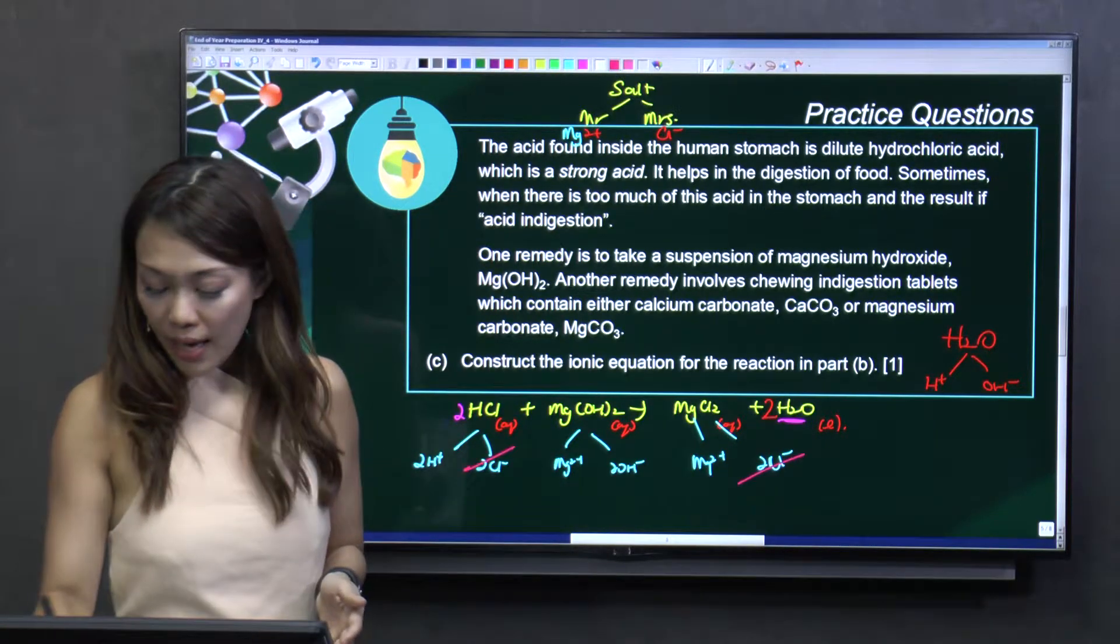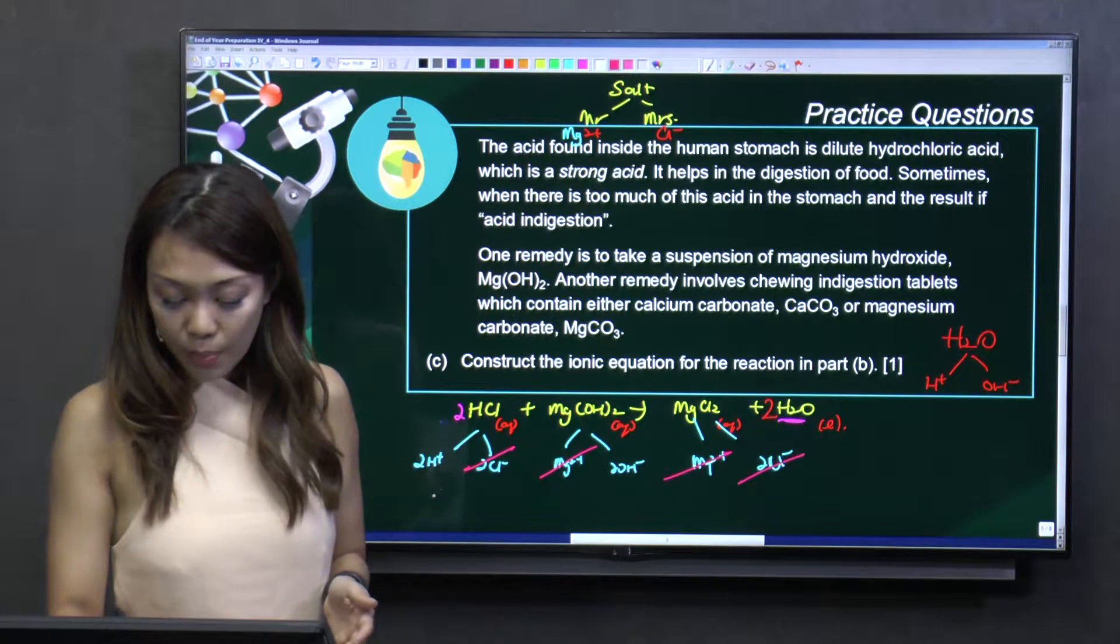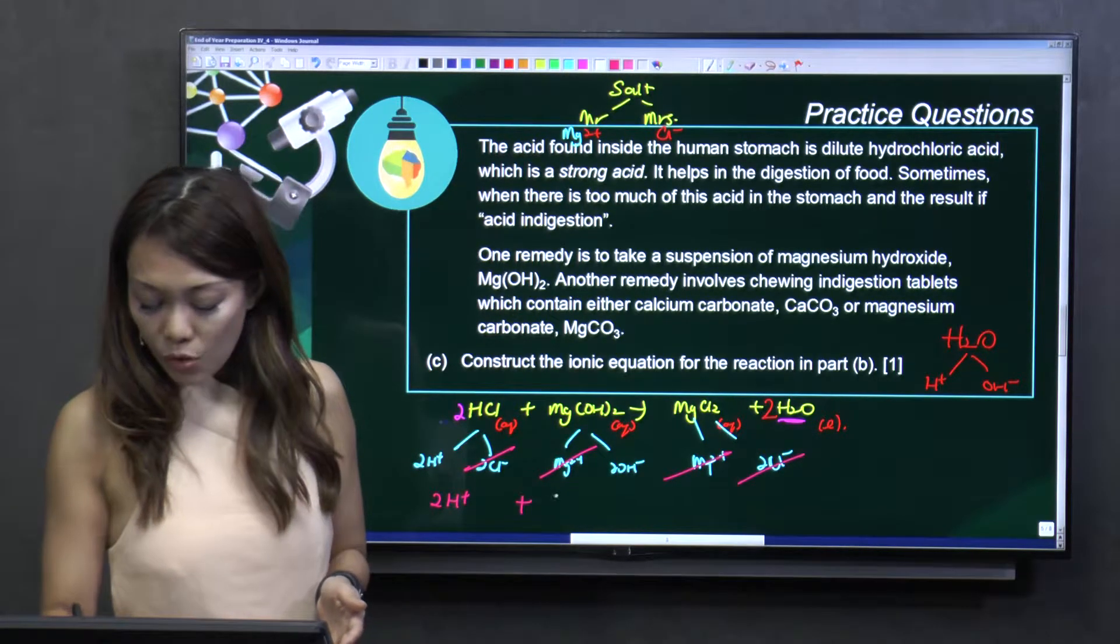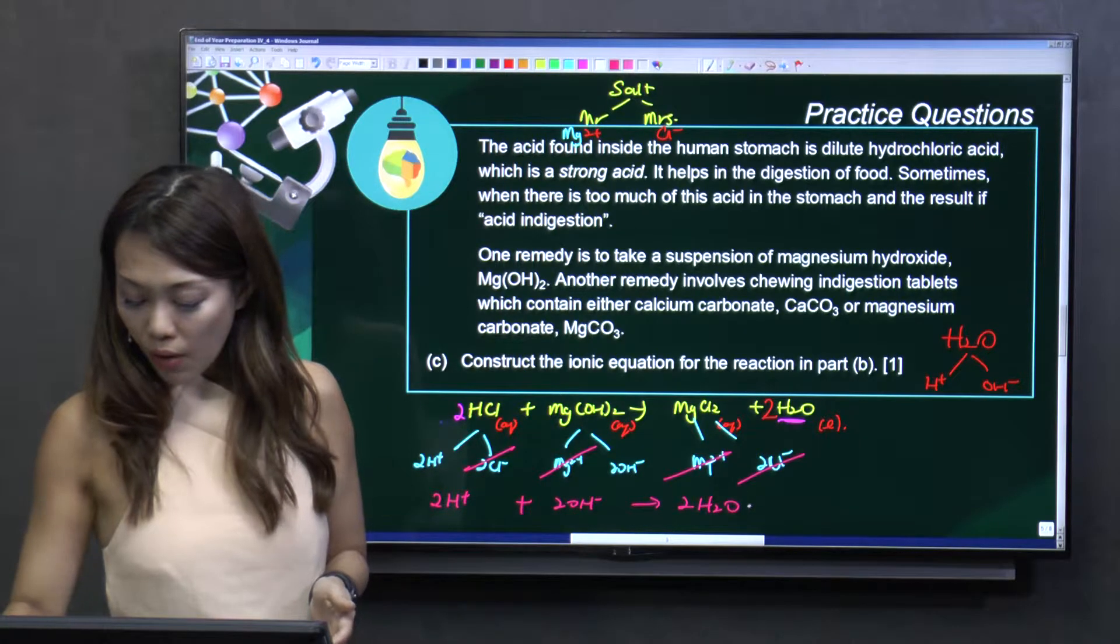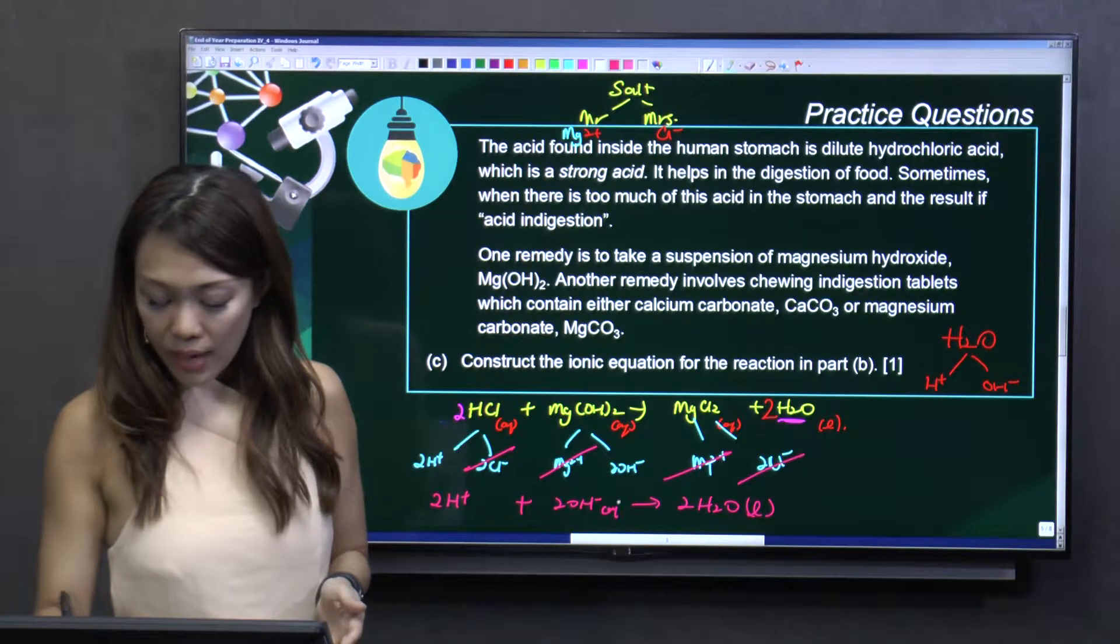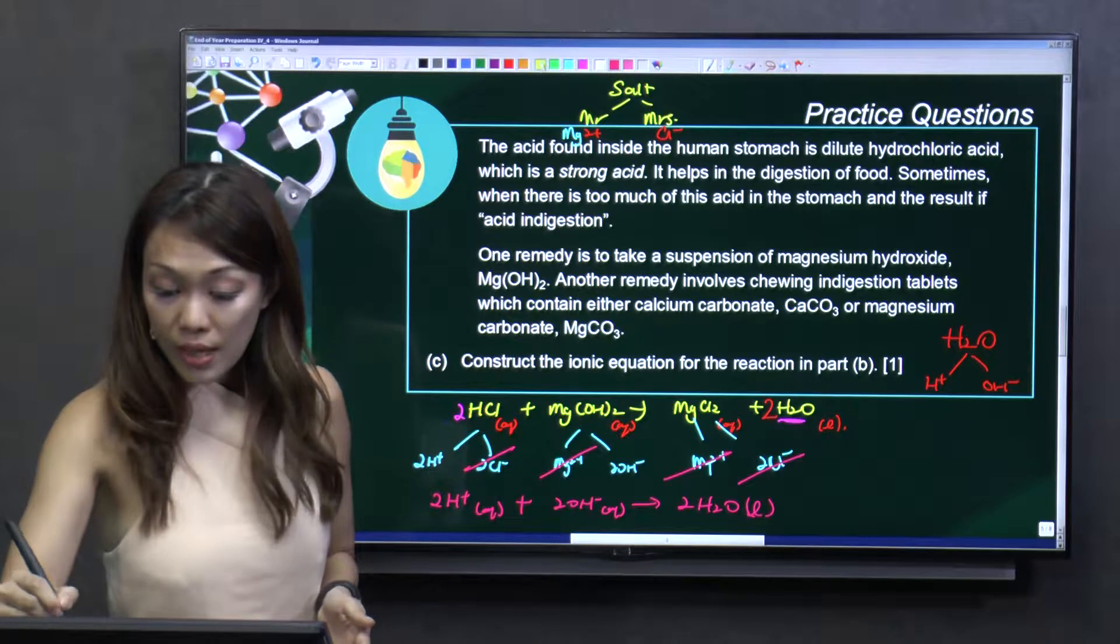And let's do the cancelling now. Cl, cancel, cancel. Mg, cancel, cancel. Hey, I got back what? 2H plus, plus 2OH minus to give you 2 sets of H2O. Okay. Liquid, aqueous, and aqueous.